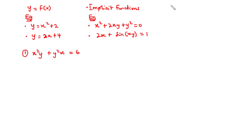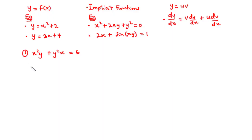With the product rule, if we have y equals u times v, then dy/dx equals: hold v and differentiate u with respect to x, plus hold u and differentiate v with respect to x. For x squared y, we hold y and differentiate x squared with respect to x, giving 2x; then we hold x squared and differentiate y with respect to x. When we differentiate y, we multiply the derivative by dy/dx. The derivative of y with respect to x is 1, so we multiply that by dy/dx.